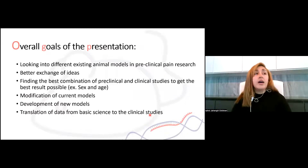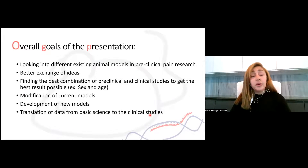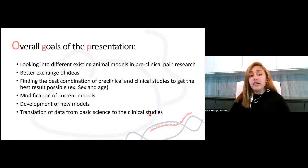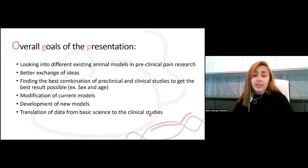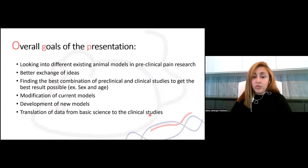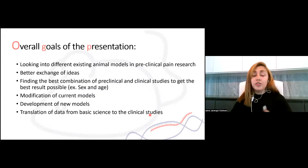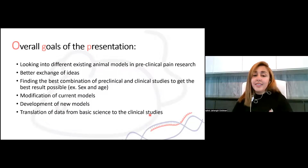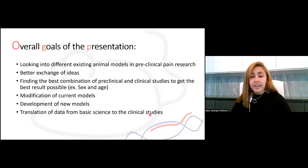As an example, in preclinical research, it was mostly male rodents and young ones that were used, but now as we know that chronic pain patients are mostly women in older ages, researchers started to use both sexes and modify their experimental design to fit more into clinical context. So this is really important.